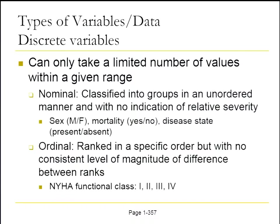Let's get started with data first, and then we'll talk about statistics. We're going to start with discrete variables because they're the most basic. These are variables that can take a limited number of values within a given range. The two most commonly discussed are nominal and ordinal variables. Nominal variables are yes-no type variables — classifying someone as male or female, describing whether they're alive or not alive, or whether a disease is present or absent. No indication of relative severity.